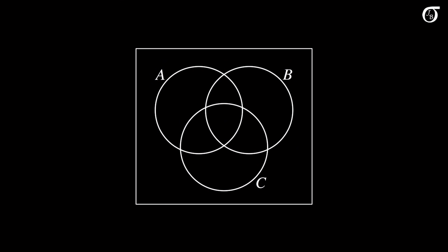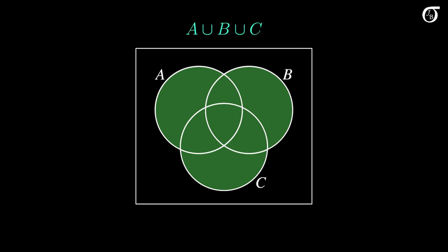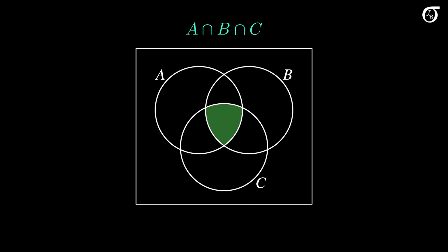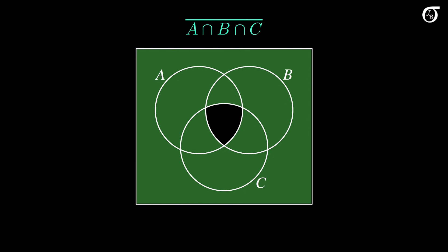The concepts of unions, intersections, and complements can be extended to more than two events. For example, here's a Venn diagram representing three events A, B, and C. The union of A, B, and C is the region where A or B or C occurs; its complement is where neither A nor B nor C occurs. The intersection of A, B, and C is the event all three occur, and the complement of that three-way intersection is where the three events do not all occur. Sometimes these combinations can be a little difficult to think about, so more complicated problems will be worked through in another video.